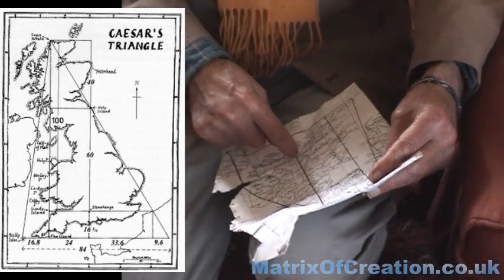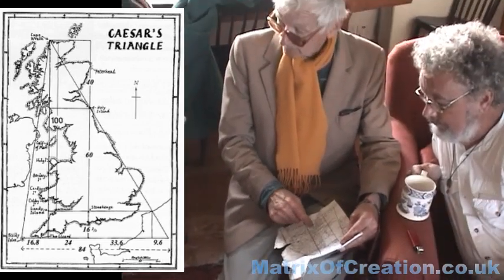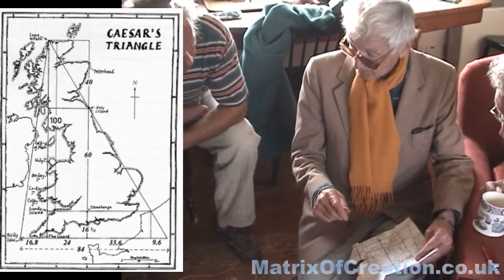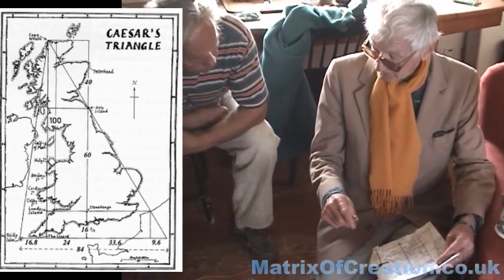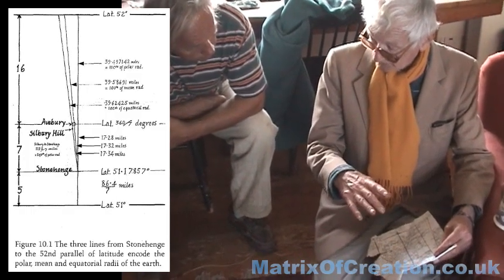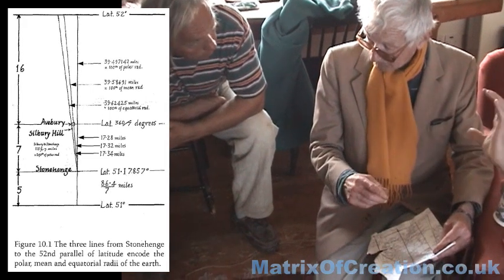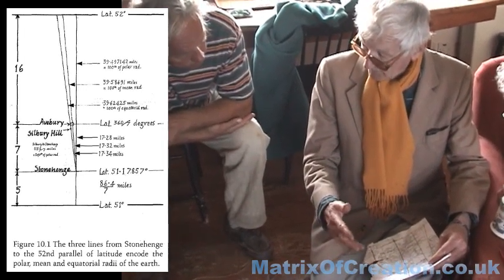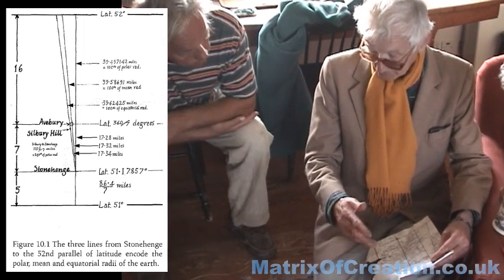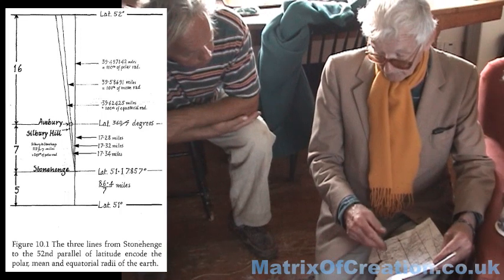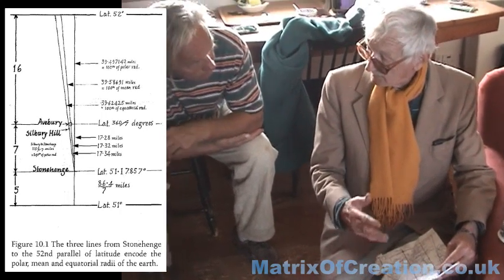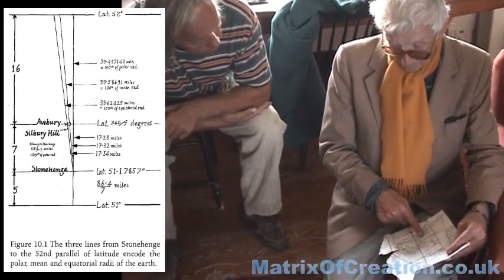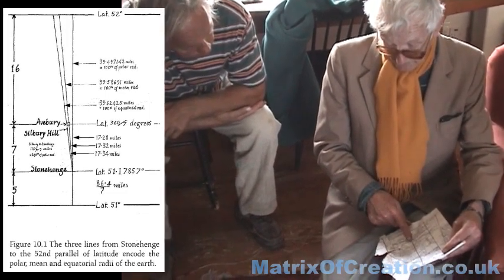The distance from Avery to 1952 is 39.497142 miles, which is the hundredth part. And then another line to Avery gives you the mean value of the Earth's radius. And the one through Silvery Hill gives you the equatorial radius. They're all exact.